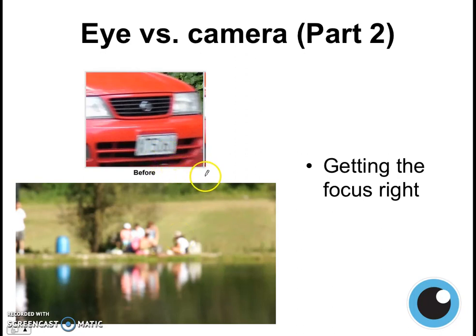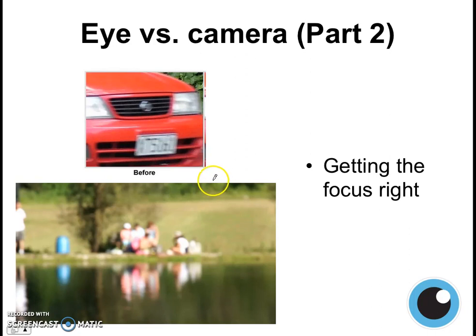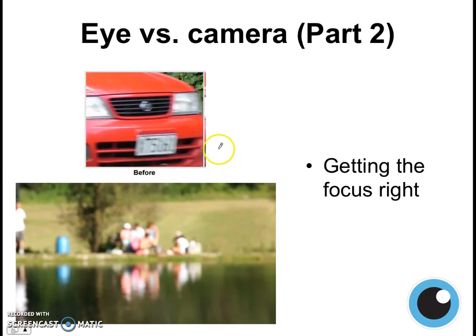The human eye doesn't seem to have a problem with focus, except if you are short-sighted or long-sighted — we'll think about that a bit later. But if your eye is working normally, focusing is something that happens automatically. You choose to focus on something and it merely comes into focus in your vision. How does the eye focus on objects at different distances? That's what we'll be talking about in this video.